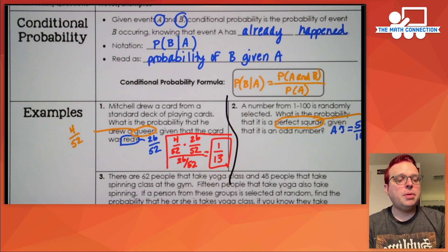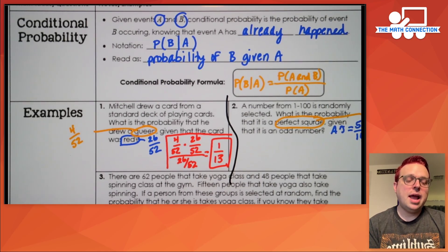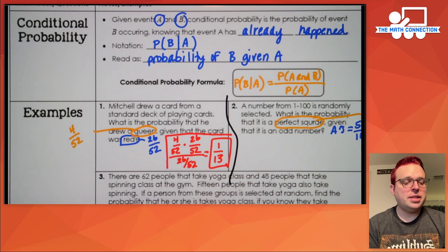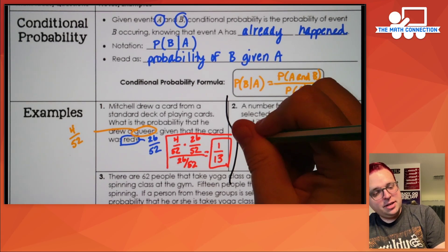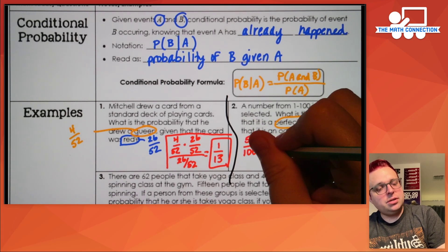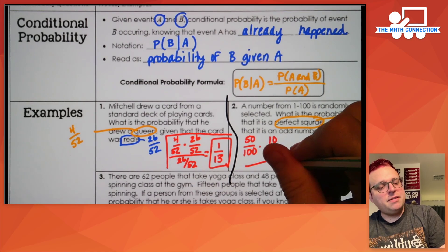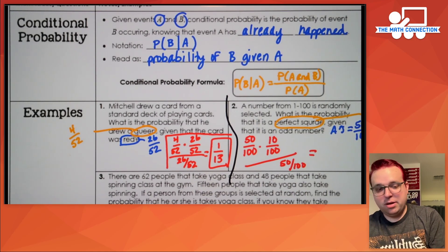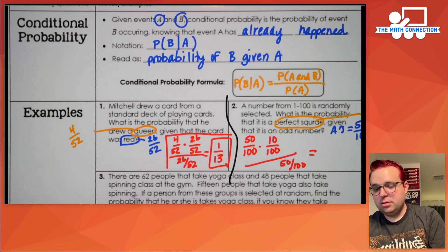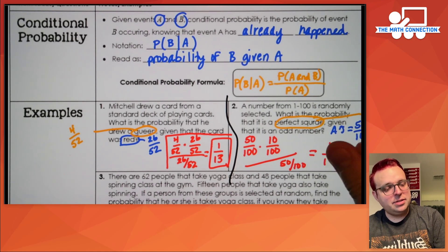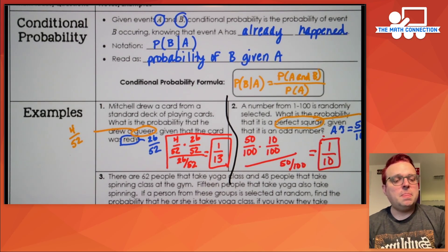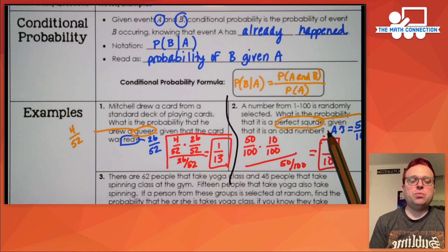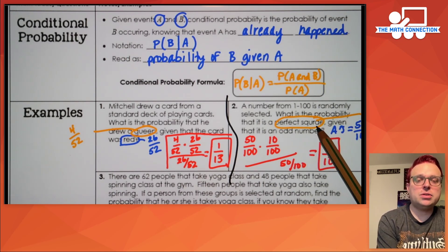What you're looking for is the probability that they both occur — that's on top — and you divide by the probability of the given event, which is 50 out of a hundred. So it's 50 out of a hundred times 10 out of a hundred, divided by 50 out of 100. The answer you end up with is one in 10. That means you have a one in 10 chance that when you select a random number between one and a hundred, it will be a perfect square that's odd.